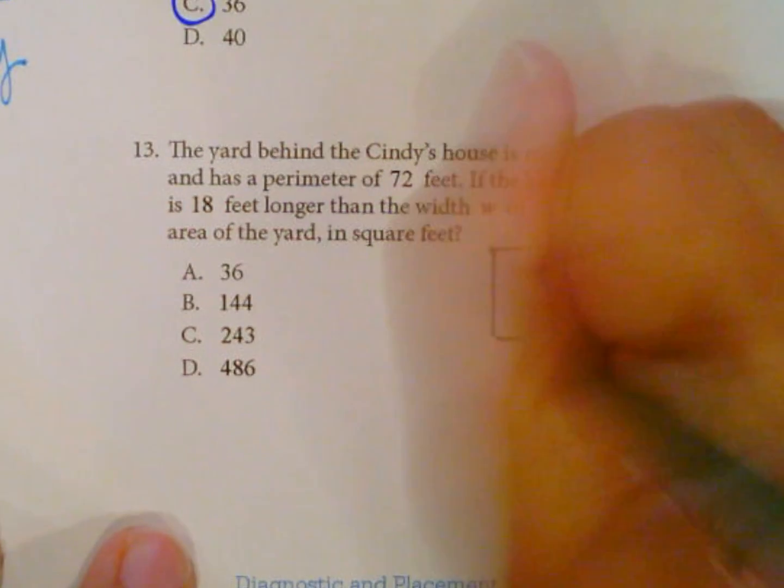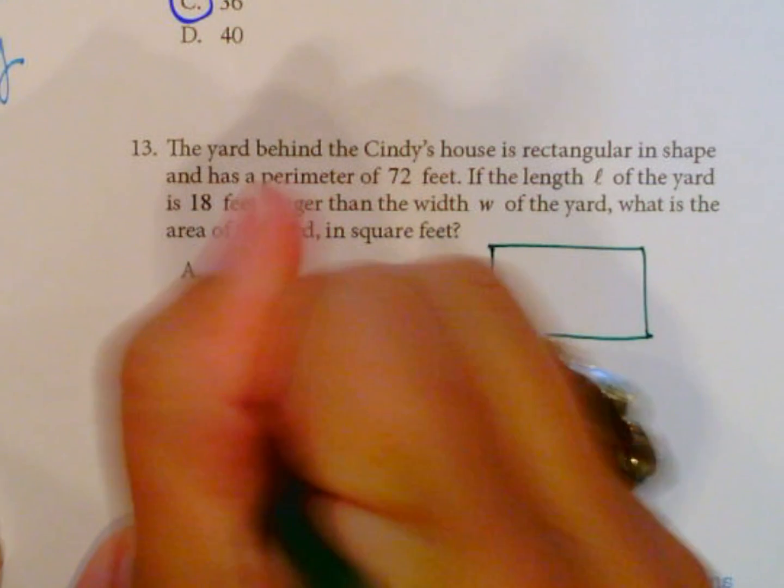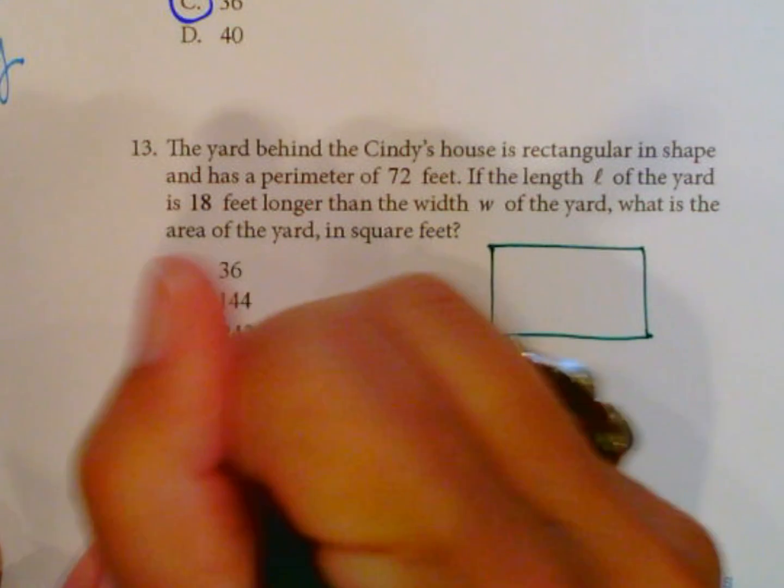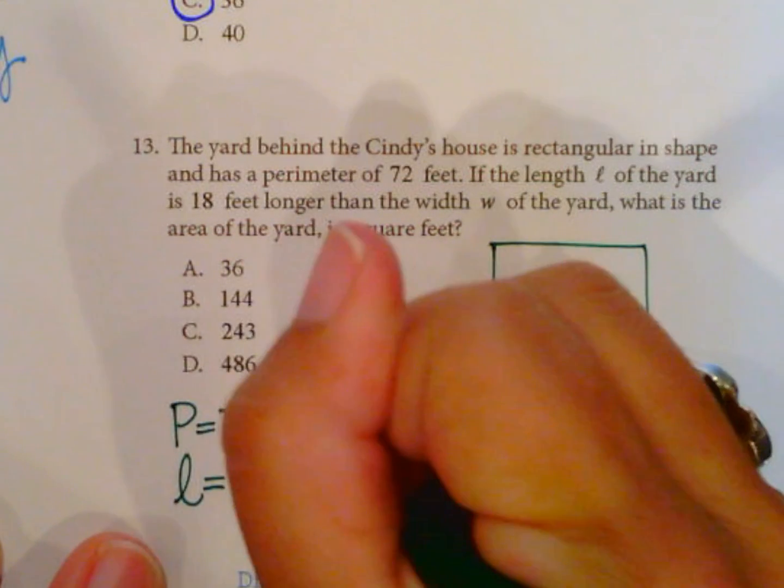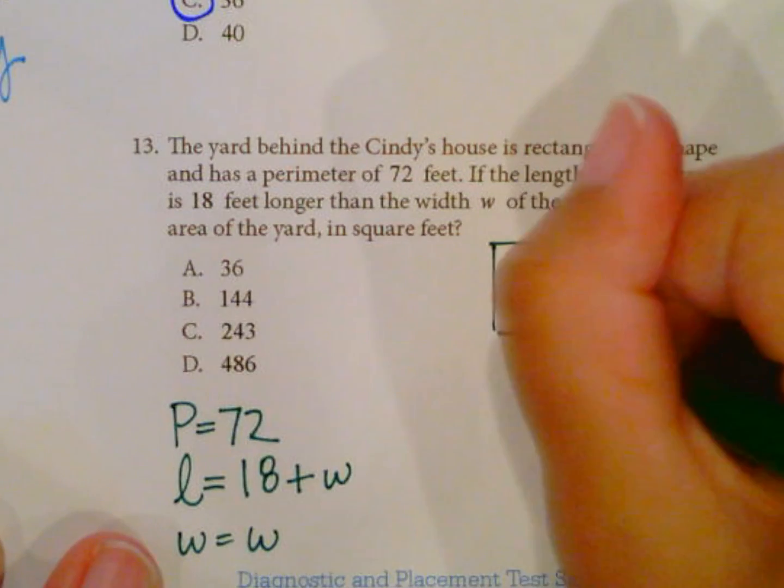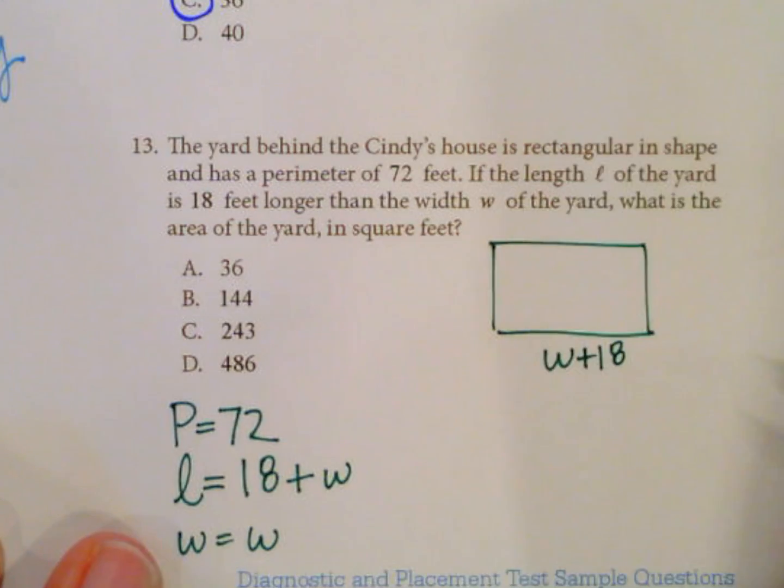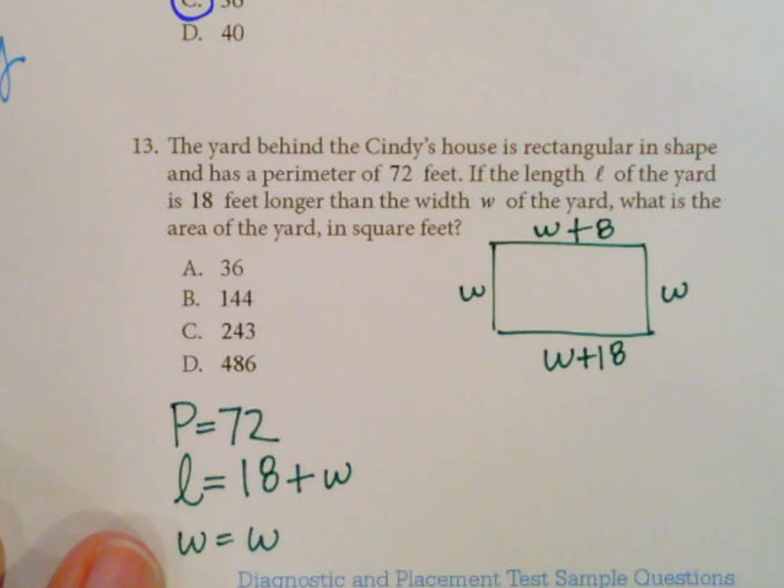Let's draw a yard here. Perimeter is 72. I'm going to go ahead and put that down here. So the length is 18 feet longer than the width, so 18 feet more than the width, and the width is just the width. So we've got w plus 18 is our length, and then w for the width. I should actually write these all the way around.